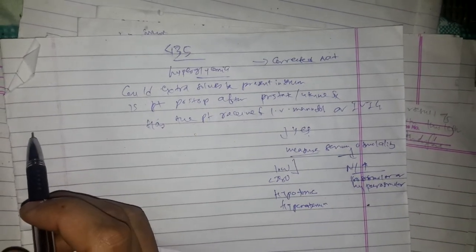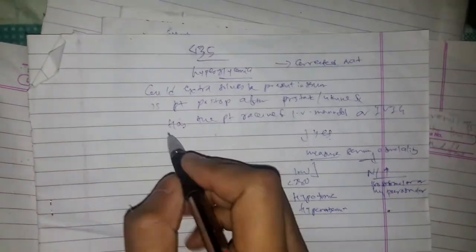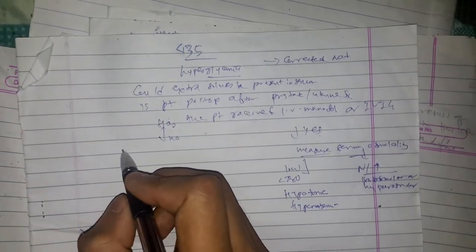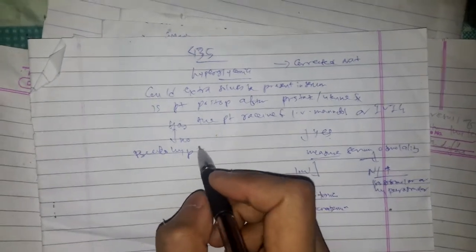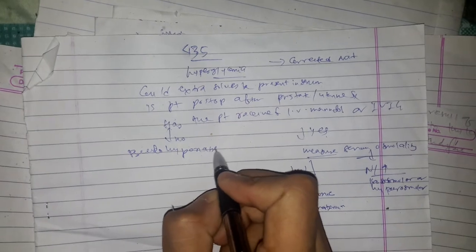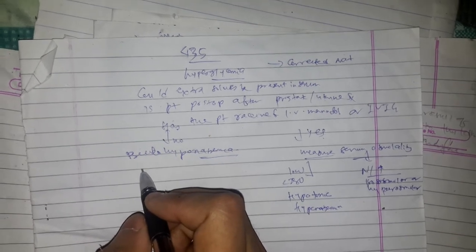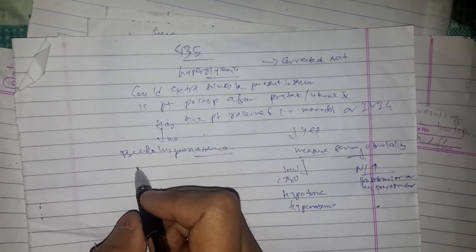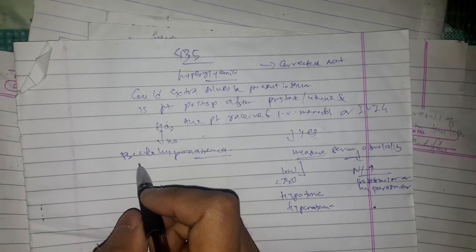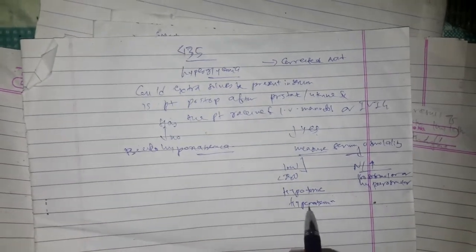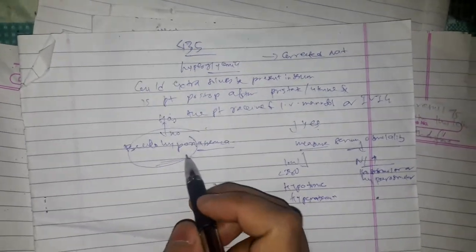Now, is there reason to suspect pseudo-hyponatremia? Causes of pseudo-hyponatremia may be hyperlipidemia or hyperproteinemia. Ask: is the serum lipemic, is the patient jaundiced, or is there a history of plasma cell dyscrasia? If yes, measure serum osmolality — if it is low, then it is hypotonic hyponatremia.